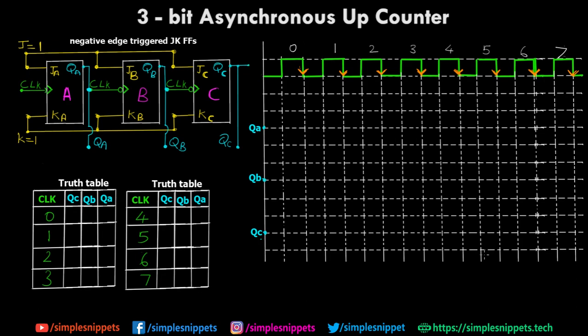As you can see on the screen, we're going to look at the circuit diagram, the truth table, and the entire clock cycle diagram. We'll understand how this 3-bit asynchronous up counter counts 8 values starting from 0 to 7. As the name suggests, it is asynchronous in nature — the clocks of the three different JK flip-flops used in this assembly are separate.